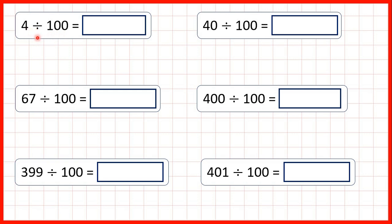What we can do is write out the number 4 and then put a decimal point on the end, because remember we really have an invisible decimal point on the end of every whole number. Then we copy down the decimal point. Now we're dividing, so the number is going to get smaller — when you divide by any number larger than 1 your answer gets smaller.